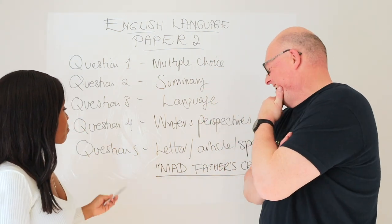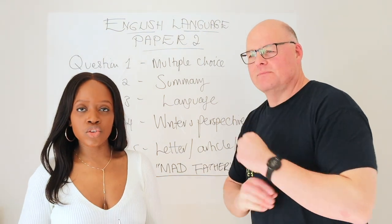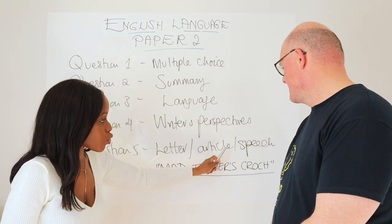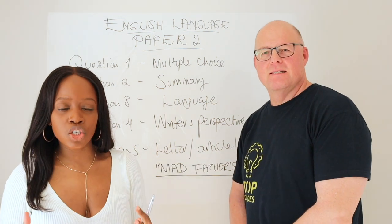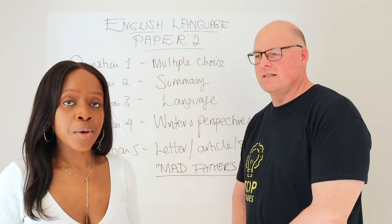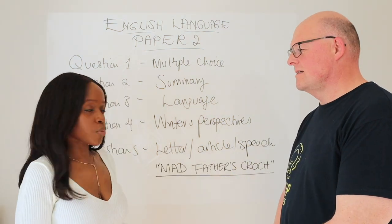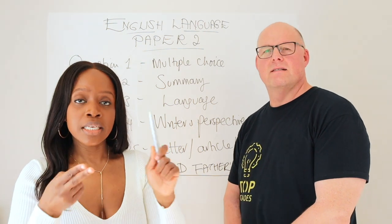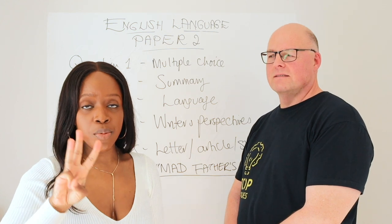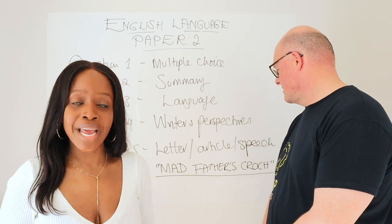Question 5 is where half of the overall paper's marks come from. You're asked to write a piece of non-fiction — either a letter, an article, or a speech — and you must allocate half the exam time to this, so a minimum of 45 to 50 minutes. My approach: firstly, make sure you're clear on the form. For a letter, start with your address and date, write 'Dear…', then make three main points supporting your perspective, two counter-arguments, a concluding discussion, and end with 'Kind regards' and your name.